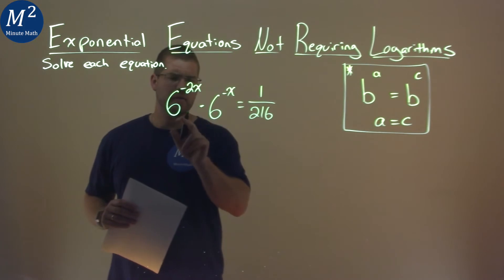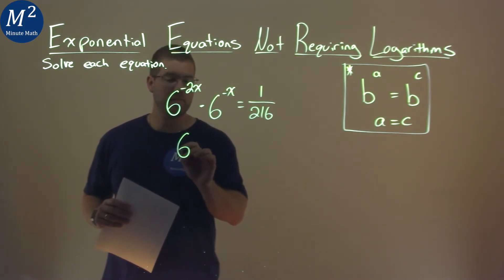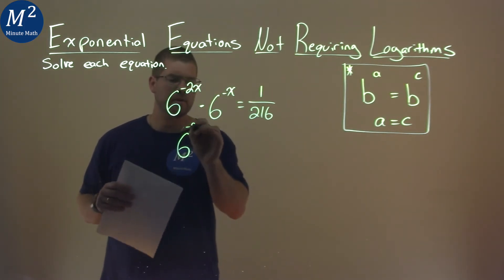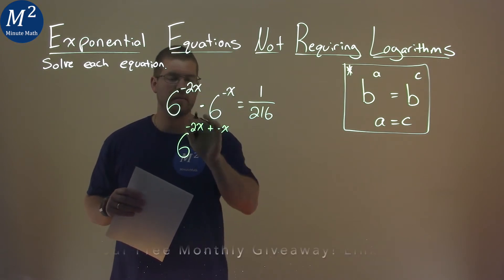Our rules state, we have multiplication here, and we have the same base. When that happens, we keep the same base if we want to combine it to be one part here, and we add the exponents, negative 2x plus a negative x, you see how they come down here.